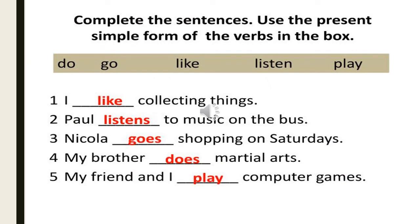Now a fill-in-the-blanks exercise using simple present forms of verbs: do, go, like, listen, play. For example: 'I like collecting things.' 'Paul listens' — I add 's' because Paul is a singular subject, so it needs a singular verb. 'Nicola goes shopping on Saturdays.' 'My brother does martial arts.' 'My friend and I play' — here the verb stays in its plural/root form.